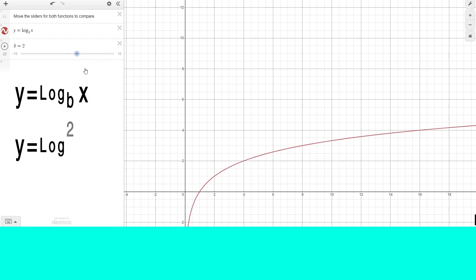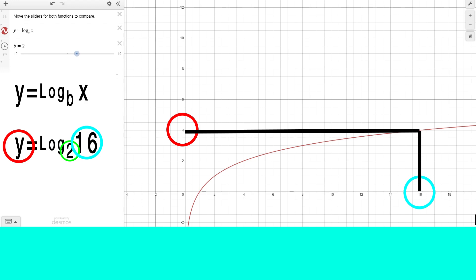So, if our variable b is 2, as I've defined it with the slider here, then if the x coordinate is 16, then our equation is 2 to the power of what equals 16, which gives us 4, right here. And that goes for all of the other points as well. For example, if our x coordinate is 4, then our equation is log base 2 of 4, meaning 2 to the power of what equals 4, and the answer to that is 2, which gives us our y coordinate.